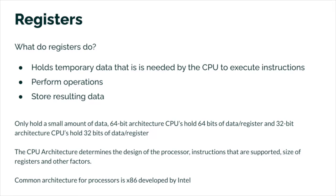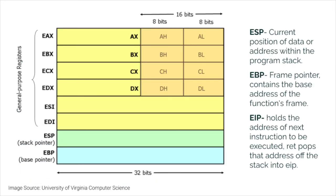Registers only hold a small amount of data. 64-bit architecture CPUs hold 64 bits of data per register, and 32-bit architecture CPUs hold 32 bits of data per register. The CPU architecture determines the design of the processor, instructions that are supported, size of registers, and other factors outside the scope of this workshop. Here we have our general purpose registers: EAX, EBX, ECX, EDX, ESI, and EDI.